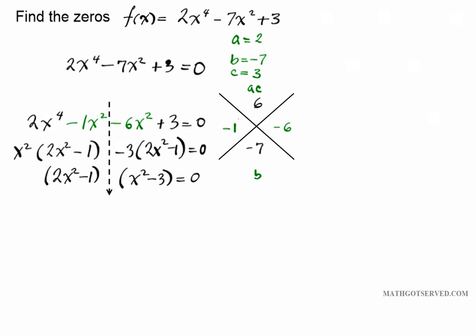Now we're going to use the zero product property to finish this up as we normally did with the quadratic equations. The process here is very identical. So we're going to separate both factors and set them equal to 0 independently. Now the solutions to these two equations are going to be the zeros of the polynomial function.